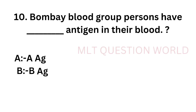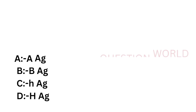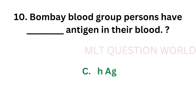Question number 10: Bombay blood group persons have which antigen in their blood? Option A: A antigen, option B: B antigen, option C: Recessive H antigen, option D: Dominant H antigen. The correct answer is option C, recessive H antigen. Small h antigen is the recessive H antigen, and it is present only in Bombay blood group persons.